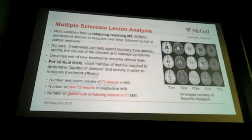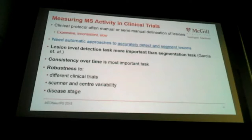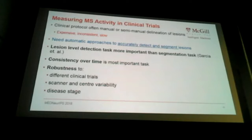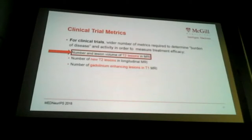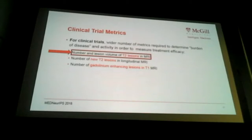There is no cure for MS, but treatments are available and we need clinical trials to develop new ones. For clinical trials we need a wider set of metrics to determine disease burden or activity: the number and volume of T2 lesions on MRI, the number of new T2 lesions on longitudinal MRI, and the number of gadolinium-enhancing lesions on T1 — which determine whether treatment is working. This analysis is currently done clinically manually or semi-manually, which is expensive, inconsistent, and very slow, so we need automatic approaches to detect and segment lesions.